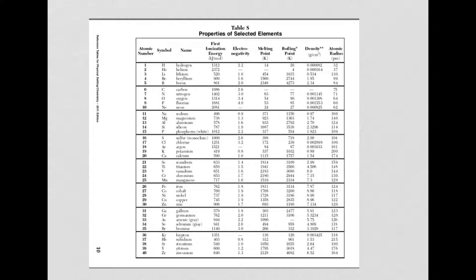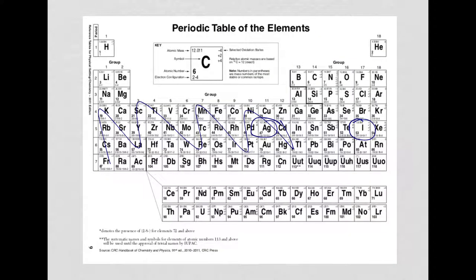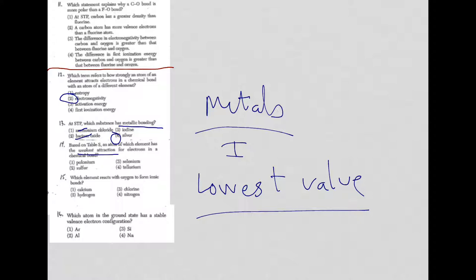Now, I didn't put the other part of reference table S here, but you would look up all four. Electronegativity is this column here. And I would suggest writing them down. For instance, polonium is 2.0. Sulfur, 2.6 when you look it up. Selenium is 2.6. And tellurium is 2.1. So the winner here for the answer really is choice one.